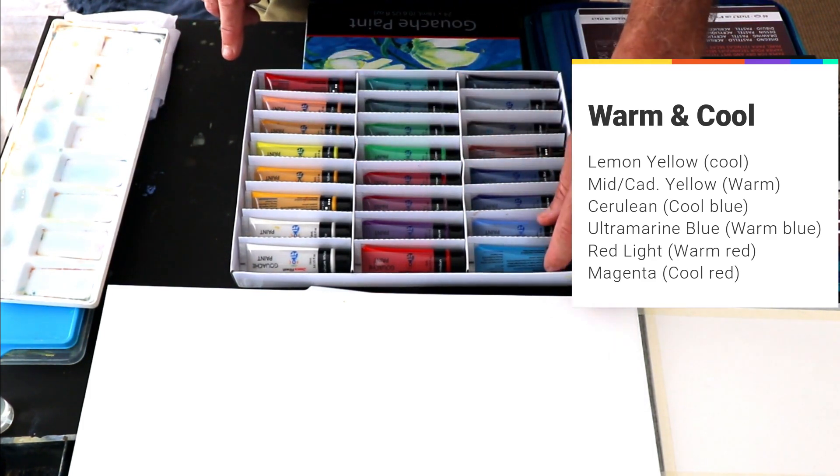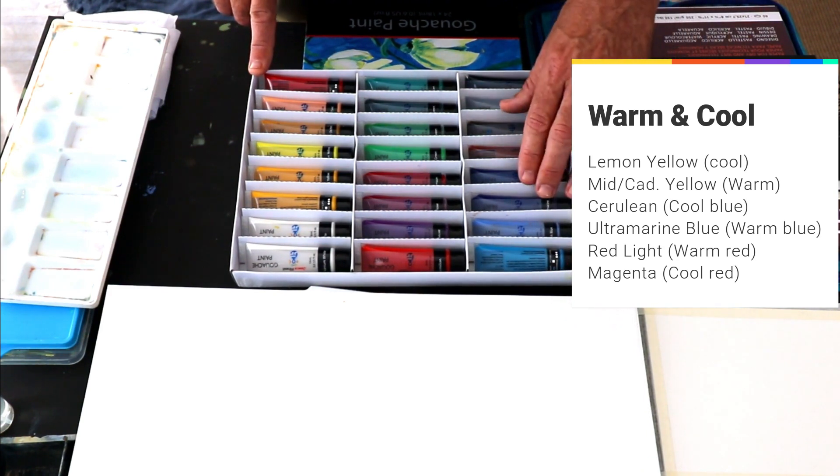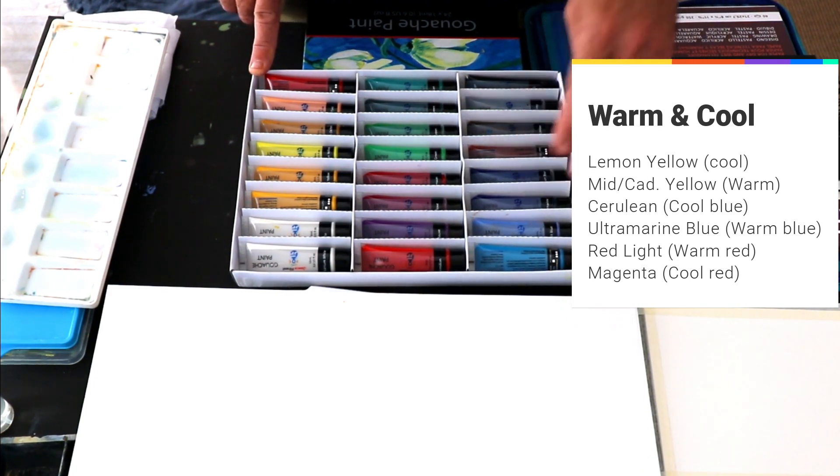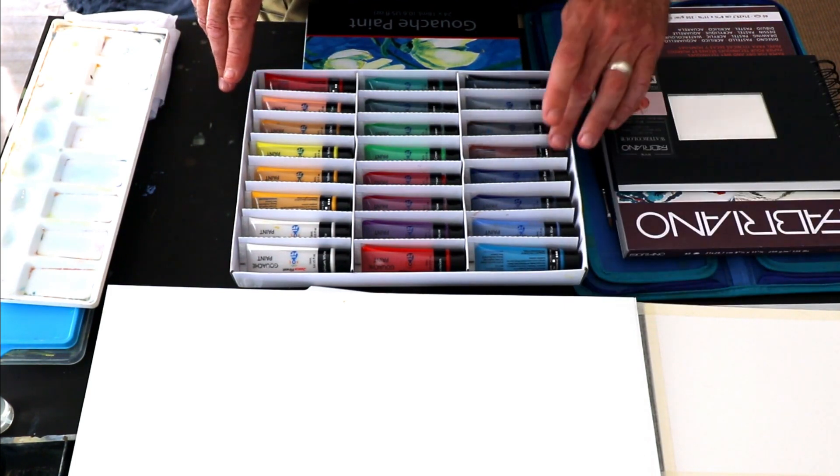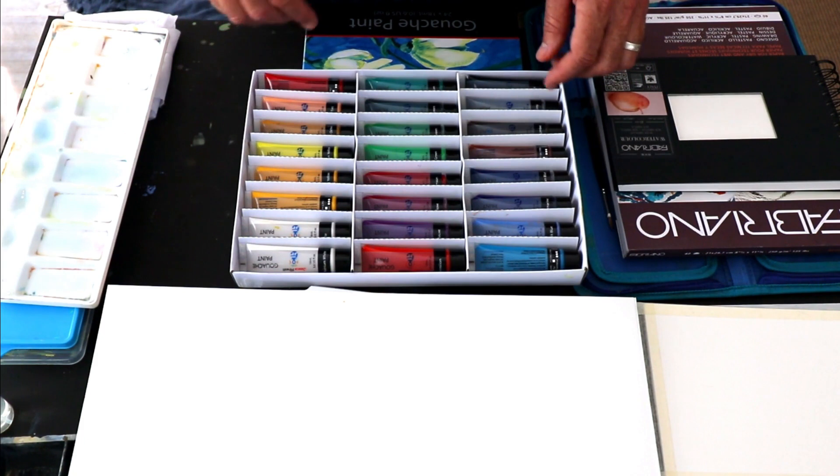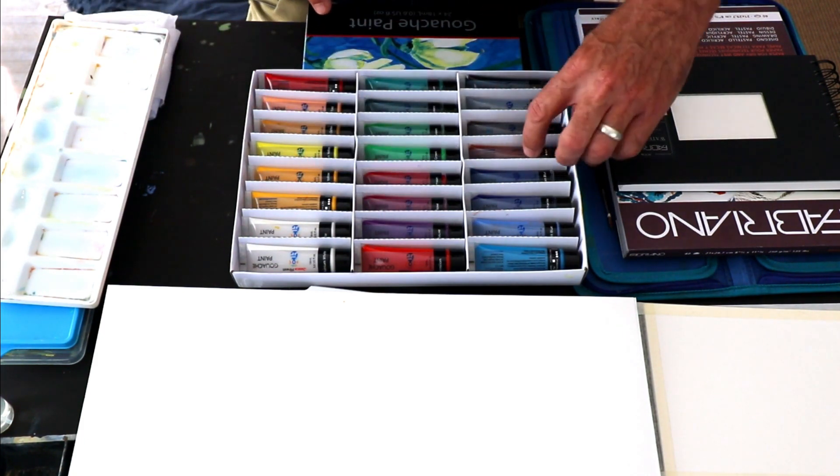With blues I like cerulean as a cool and then ultramarine as a warm blue. My favourite convenience colours are colours like burnt sienna, yellow ochre and maybe a violet as well. Comes in handy.